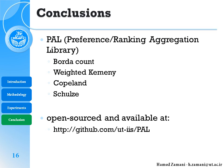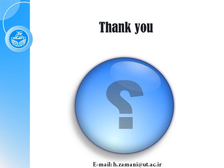Finally, we implemented an open-source package named PAL, which is a Preference and Ranking Aggregation Library. We implemented the Borda count, weighted Borda, Copeland, and Schulze methods, and will continue contributing to it. You can access it on GitHub at github.com/UT-IIS/PAL. Thank you for your attention, and sorry I can't be there in person. If you have any questions you can send an email to h.zamani@ut.ac.ir.